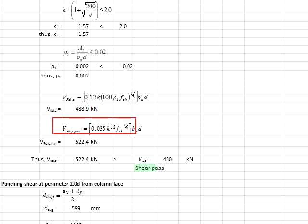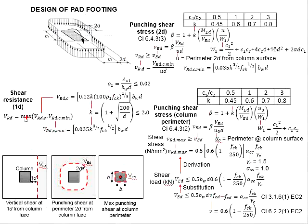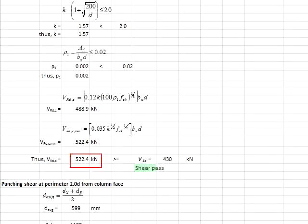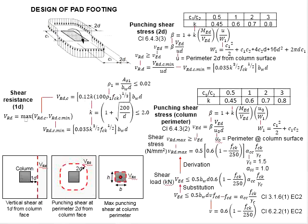Also find the VRdc minimum based on the formula here. The k value has already been computed — substitute into the equation and you get 522.4 kN. Your shear resistance is the larger of the two values, which is 522.4 kN. This is then checked against the shear load calculated earlier. Since the resistance is greater than the load, your vertical shear check passes.